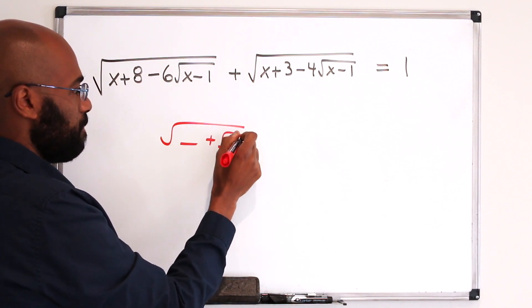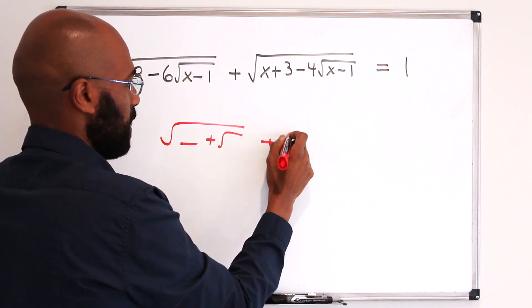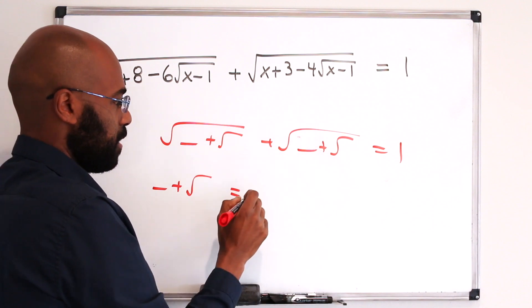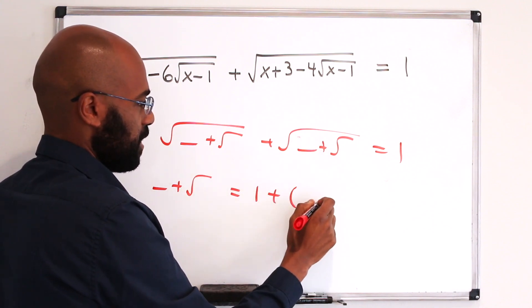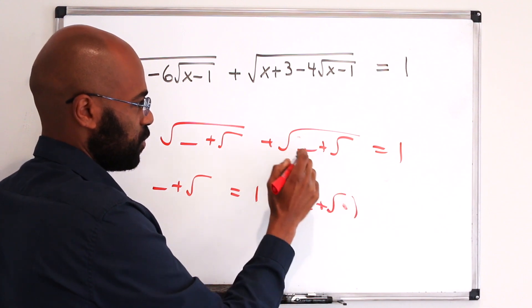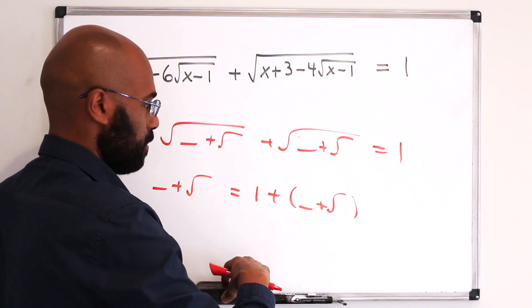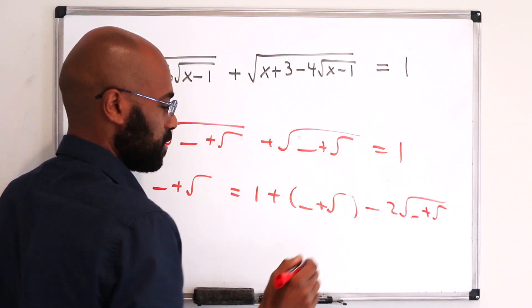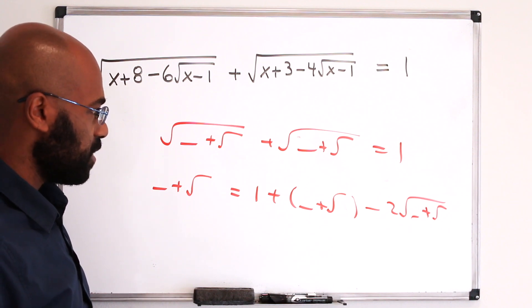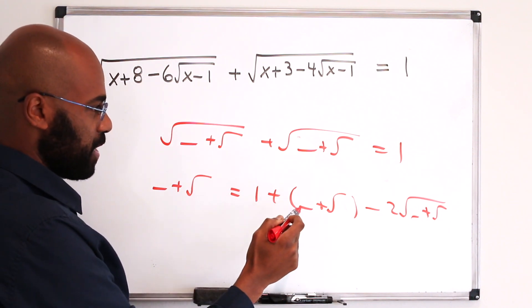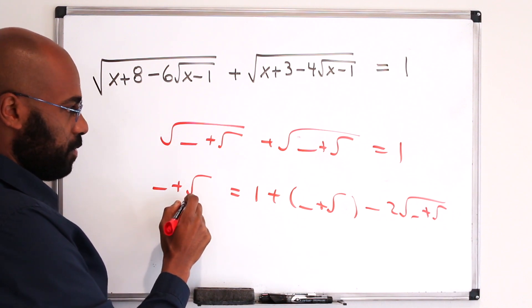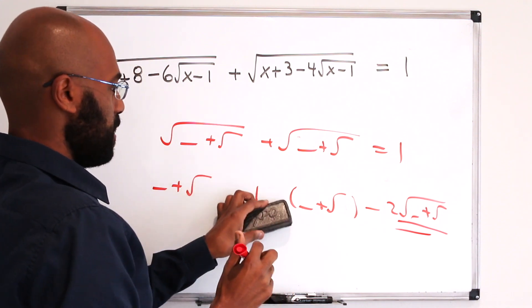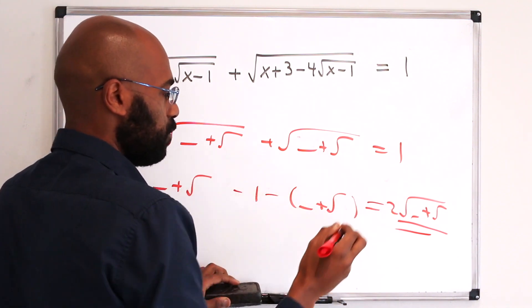then you'd have an expression here that would have a radical in it. So I'll actually write this without the content here. You'd have something like this, and then you'd have something like this. If you rearrange and square, you'd have something that looks like this, equaling 1 plus something that looks like this by squaring the two pieces here. And then minus twice whatever this is, which looks something like this. Okay, so now you'd have this unfortunate situation where you'd have to sort of square again, right?